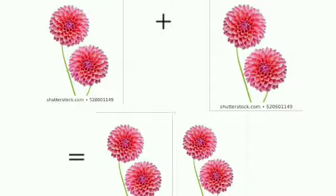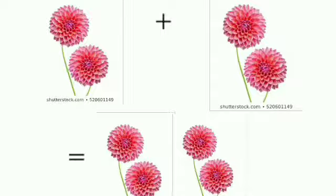Next, let's start addition by counting pictures. You know that when we put things together, we mean that we are adding them. Look at this picture. Here are 2 flowers, and 2 more flowers — 2 plus 2 is 4. So 2 plus 2 equal to 4.